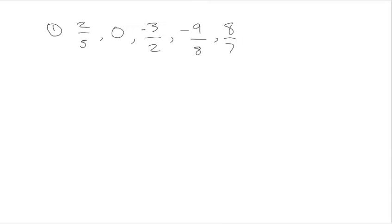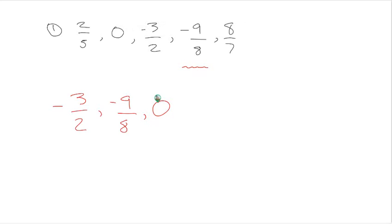It's a common error to think that negative 9 eighths is less than negative 3 halves, because negative 9 is less than negative 3. But if we look at the actual fractions: negative 3 halves is negative 1 and a half, and negative 9 eighths is just a little bit less than negative 1. So the correct order is: negative 3 halves, then negative 9 eighths, then 0, then 2 fifths, and finally 8 sevenths — since 8 sevenths is more than 1.